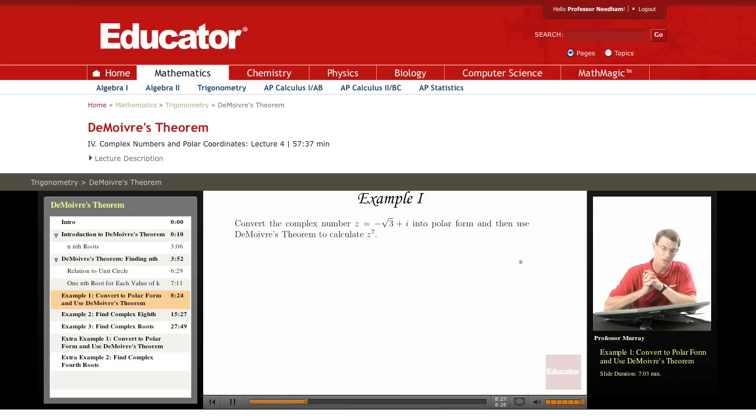So the first example here, we have to convert the complex number z equals negative root 3 plus i into polar form, and then use de Moivre's theorem to calculate z to the seventh.